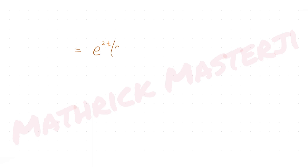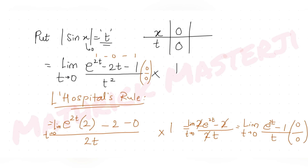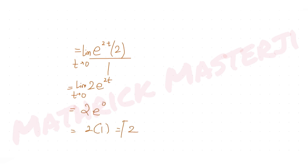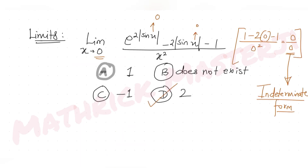Applying L'Hôpital's rule again: derivative of e^(2t) is 2e^(2t), derivative of t is 1. So we get 2e^(2t). Taking the limit as t→0 gives 2·e^0 = 2·1 = 2. The value of the limit is 2, which matches answer choice D.